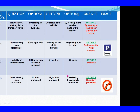Question 13: How can you distinguish a transport vehicle? Option 1: By looking at the tyre size. Option 2: By color of the vehicle. Option 3: By looking at the number plate of the vehicle. The right answer is Option 3: By looking at the number plate of the vehicle. Question 14: The following sign represents. Option 1: Keep right side. Option 2: Parking on the right allowed. Option 3: Compulsory turn to right. The right answer is Option 2: Parking on the right allowed.